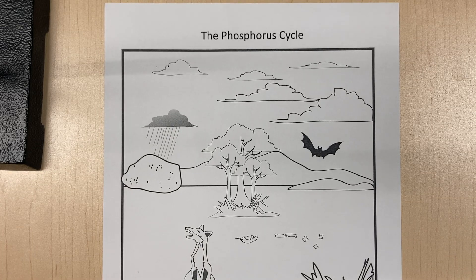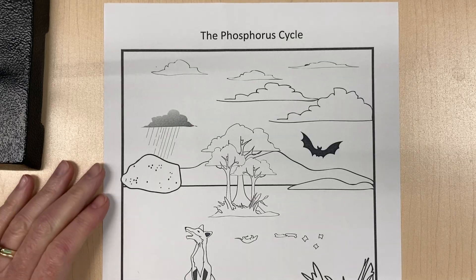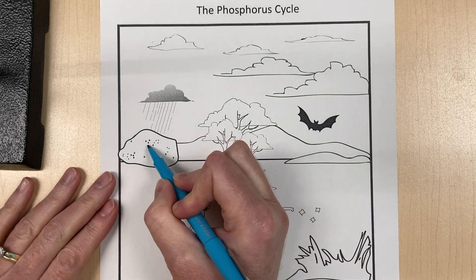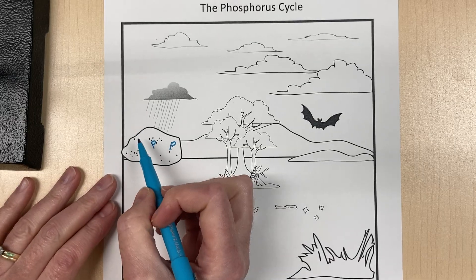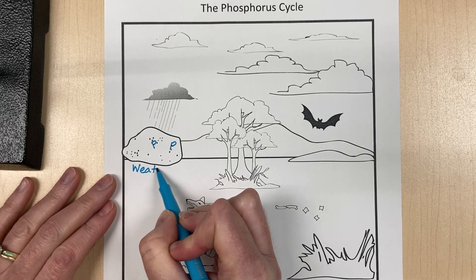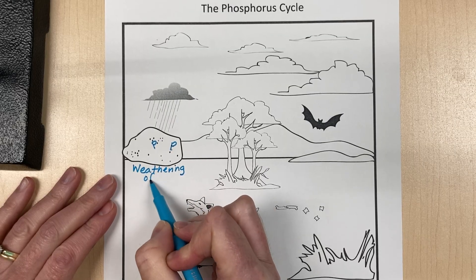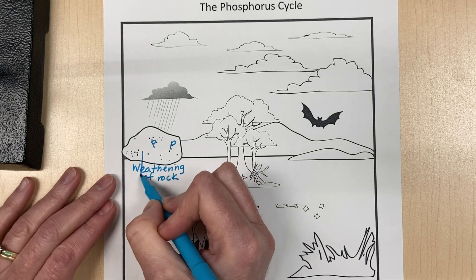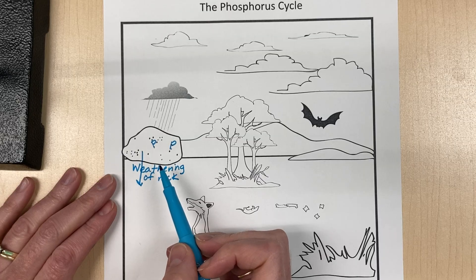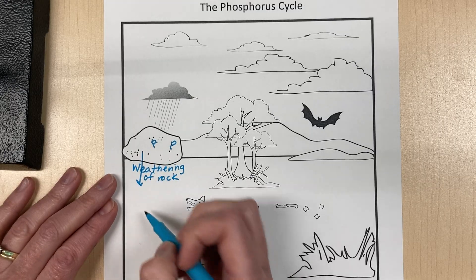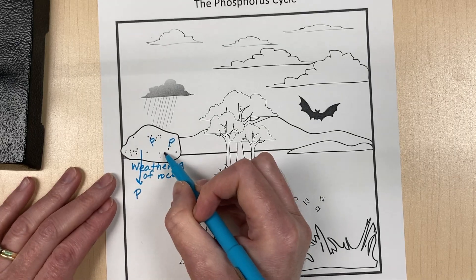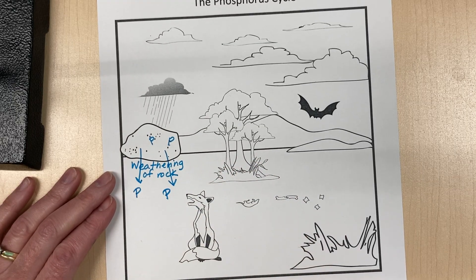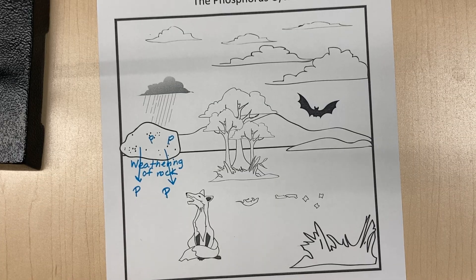The phosphorus cycle doesn't have as much to know as some of the other cycles. Let's start with how phosphorus first gets into nature — it gets in through the weathering of rock. Phosphorus is in our rocks, and weathering includes rain, freezing and unfreezing of rocks, earthquakes, and lichen or mosses growing on and crumbling the rocks. Phosphorus is released into nature initially through weathering, and sedimentary rock is the largest reservoir.